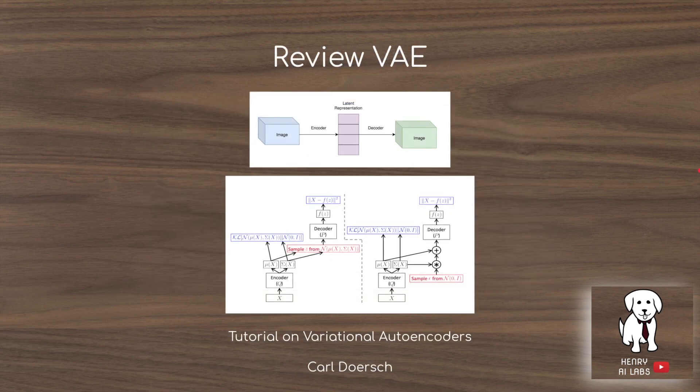To review the differences between a regular autoencoder and a variational autoencoder: a regular autoencoder takes an image in, encodes it into a low-dimensional vector, and then decodes it into an image. A variational autoencoder modifies this framework by mapping points to a Gaussian space rather than a direct point in the low-dimensional vector space.